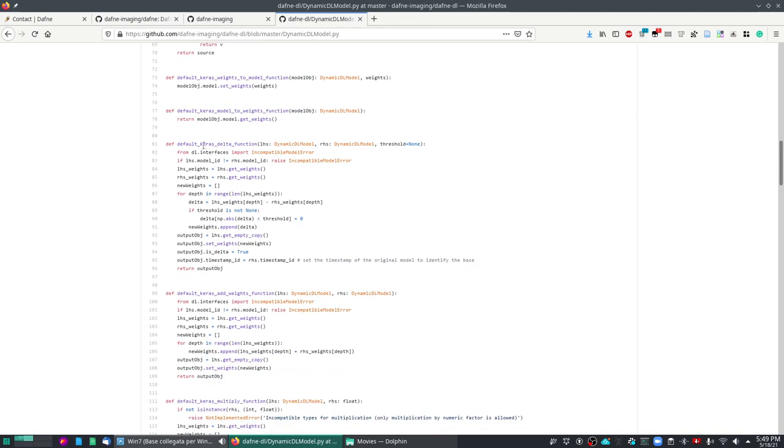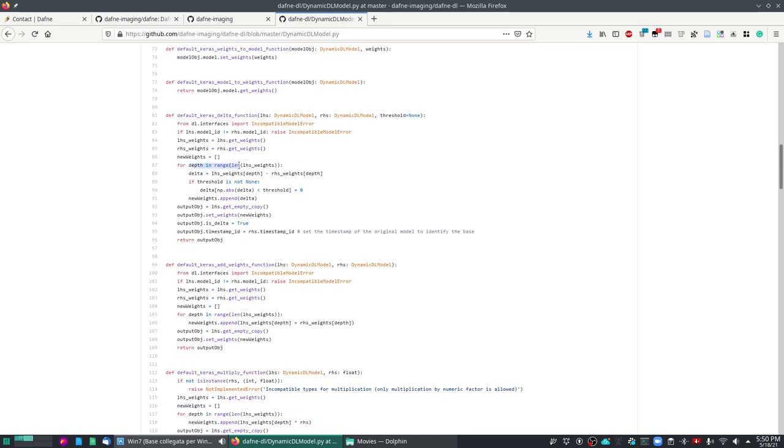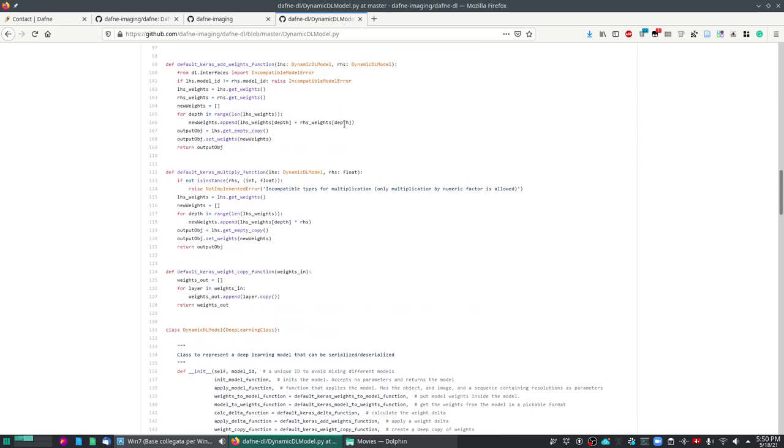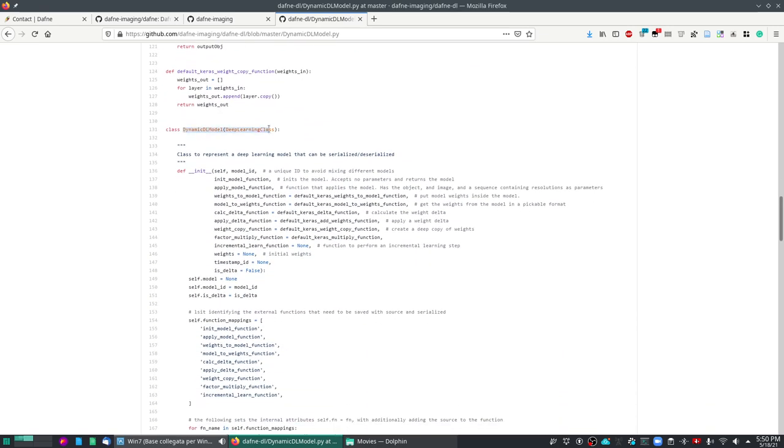And this is also how the function for example to calculate a delta is implemented. You have two models, the left and right hand side models, and in this case we get the weights and we calculate for each depth of the model the difference in the two weights. And these are all the standard functions that are already defined. This is the dynamic dlmodel class that defaults to these Keras functions, but you're free to define different functions if Keras is not the kind of library that you use.